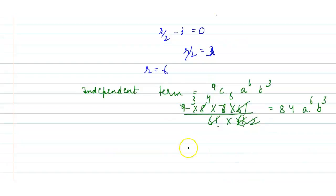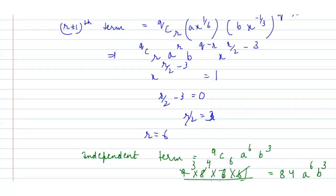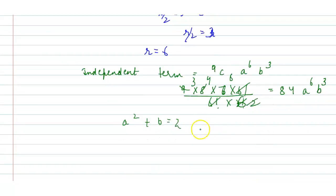So therefore, a squared plus b squared, that should be equal to 2. So from here I get a equals 1 and b equals 1.